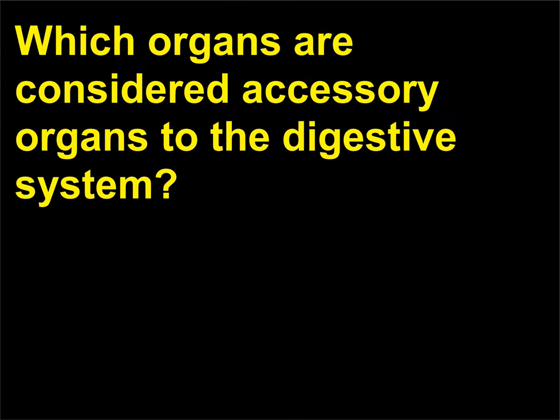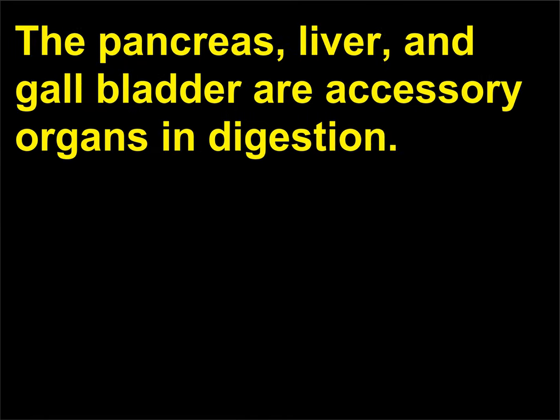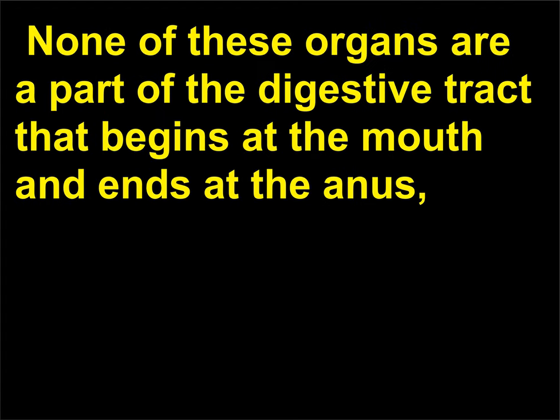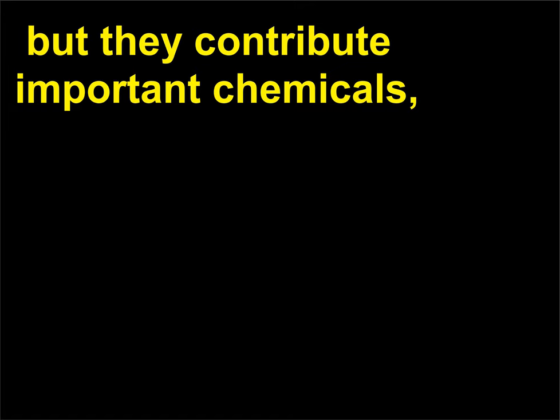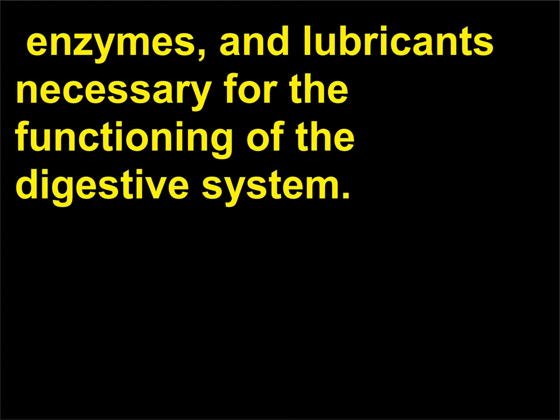Which organs are considered accessory organs to the digestive system? The pancreas, liver, and gallbladder are accessory organs in digestion. None of these organs are a part of the digestive tract that begins at the mouth and ends at the anus, but they contribute important chemicals, enzymes, and lubricants necessary for the functioning of the digestive system.